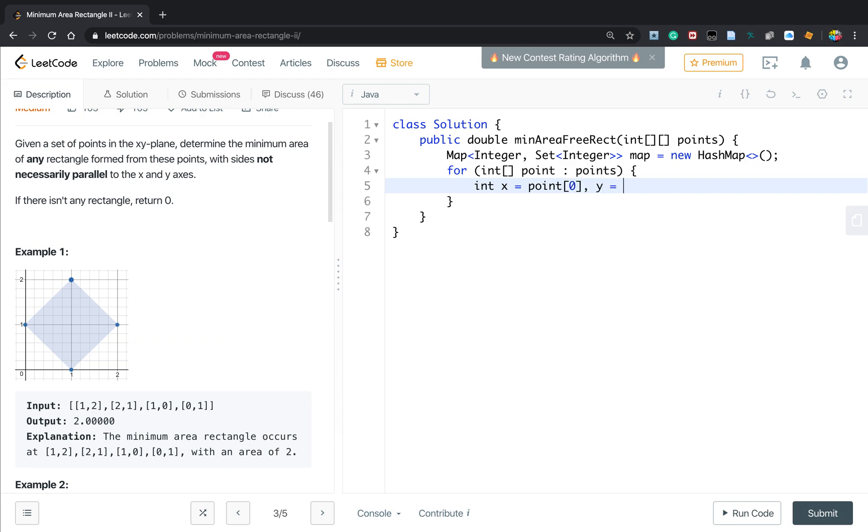And if this map doesn't contain this key x, what should we do? We should put x new hash set. And we get this x and we add this y. So we put all the points to the map.